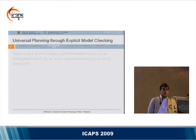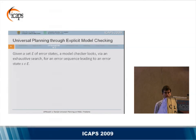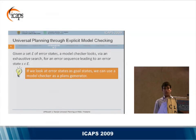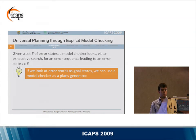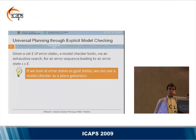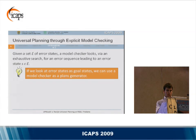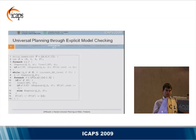How to use explicit model checking for universal planning? The idea is very simple. Given a set of error states, a model checker looks for an error sequence leading to an error state. So if we look at error states as goal states, we can use a model checker as a plan generator. In the paper you can find the formal description of the universal planning problem as well as the algorithms and models we used. Here I just sketch the idea.